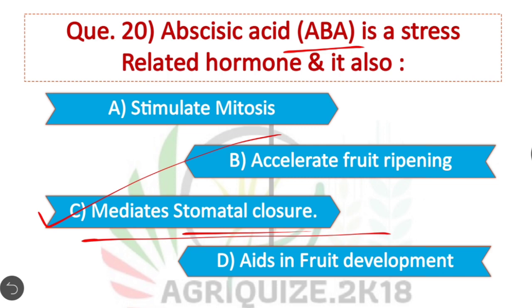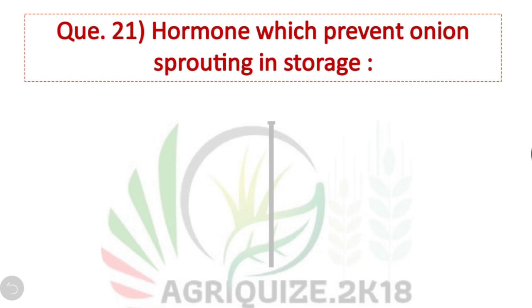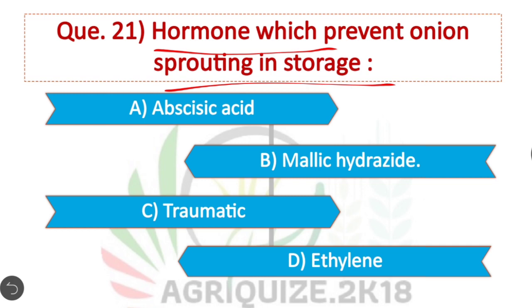Question 21: Which hormone prevents onion sprouting in storage? Option B is correct. Maleic hydrazide is responsible for preventing the sprouting of onions in storage.